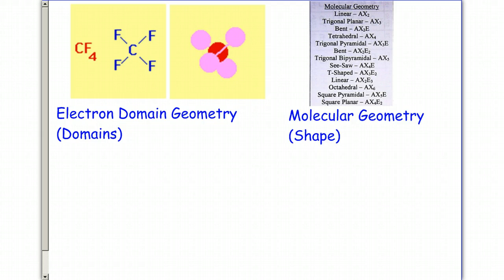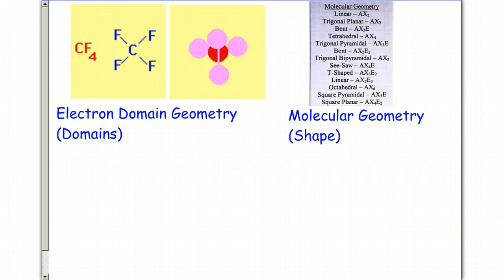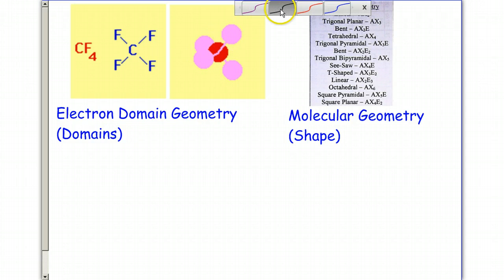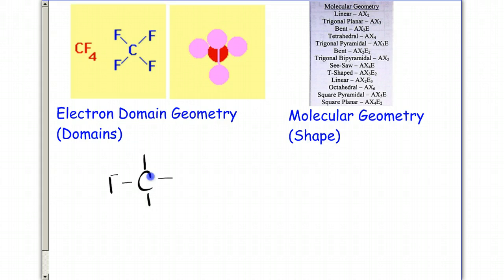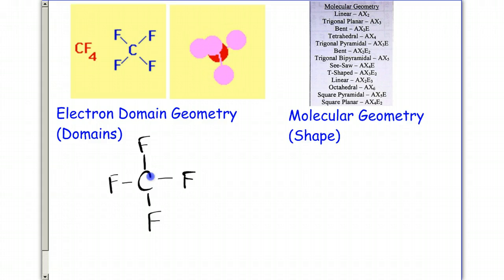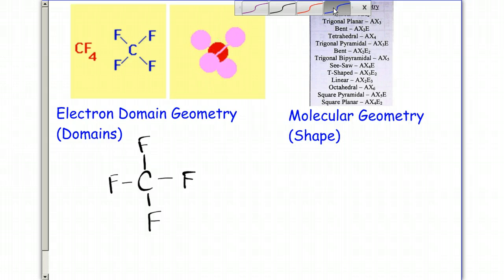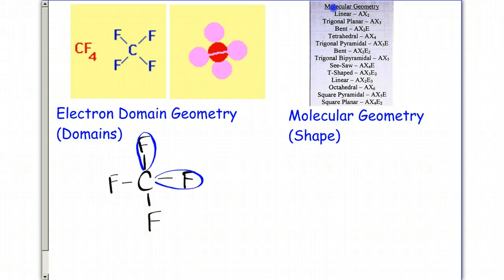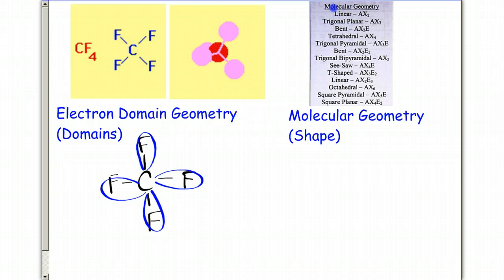Starting with CF4, the moving diagram is trying to show you a three-dimensional view of the molecule. Let's look at the electron domain geometry first. I'm going to redraw it and we're going to count the domains. Starting in blue for my domains, we have one, two, three, four domains, and four domains is known as tetrahedral.